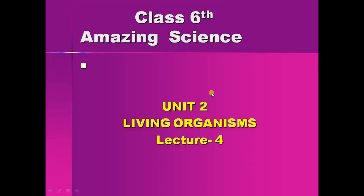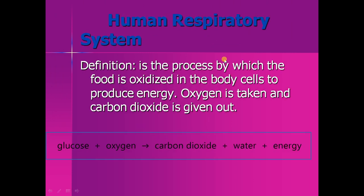Bismillahirrahmanirrahim. Unit 2, Living Organisms, Lecture Number 4: Human Respiratory System. The human respiratory system can be defined as the process by which food is oxidized in the body's cells to produce energy — oxygen is taken in and carbon dioxide is given out.